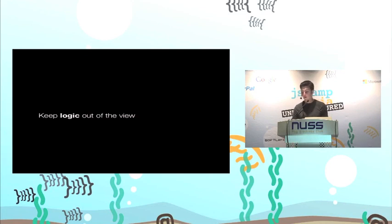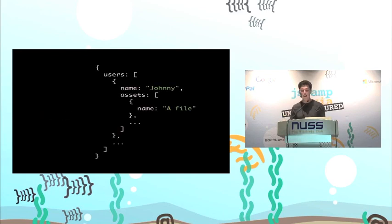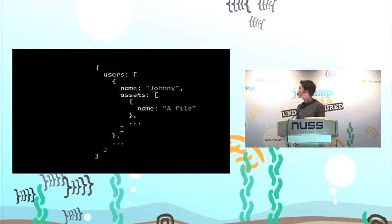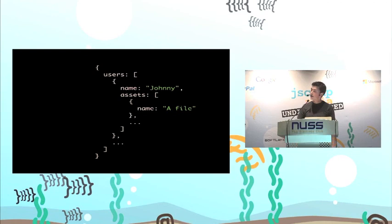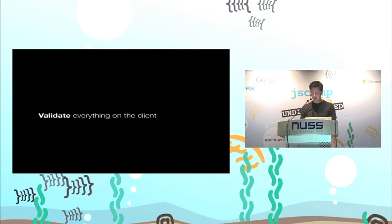You've got to preload data — there's no point having an asynchronous UI if the user is constantly waiting for new data to come in from the server. Don't be afraid of preloading more data than you actually need, because it's much better to waste data than to block the client with loading spinners. Basically, I just load in a big blob of JSON and don't think anything more of it.